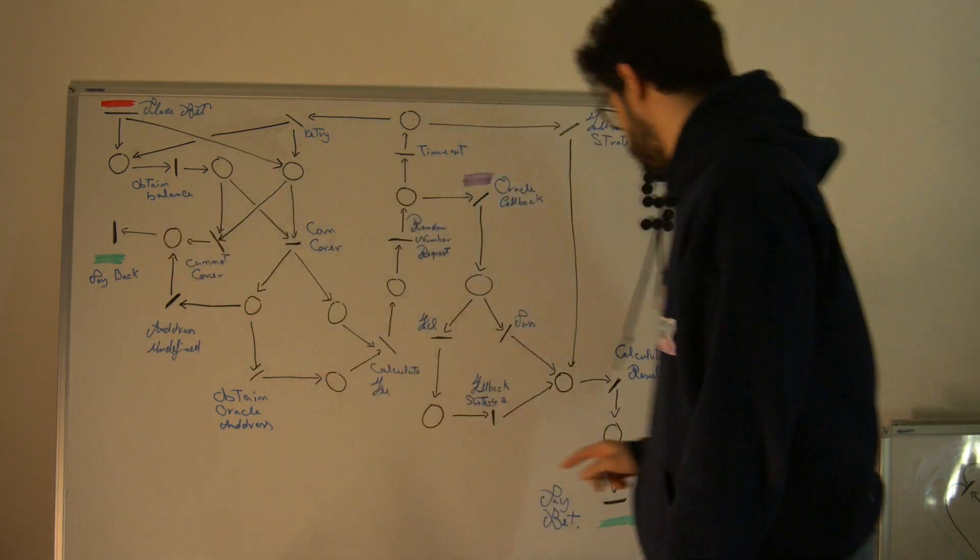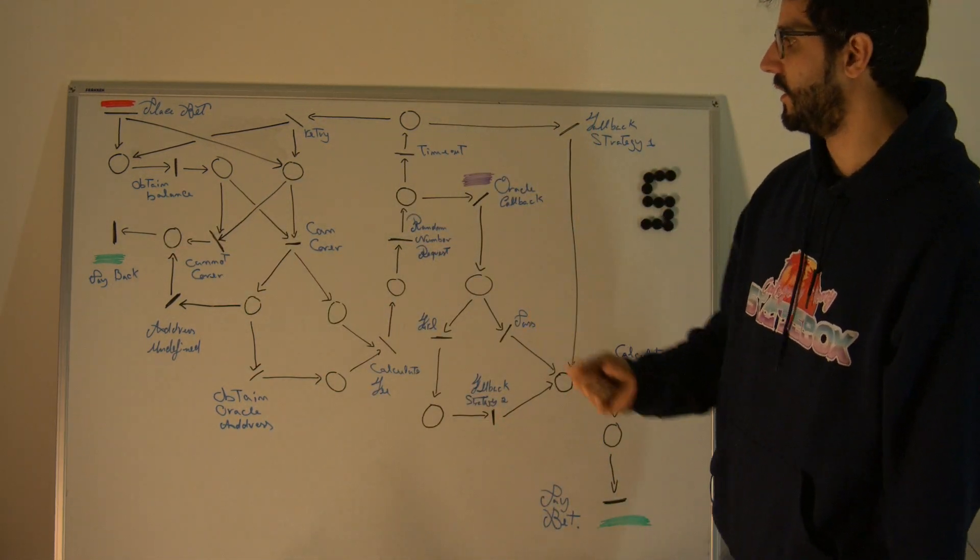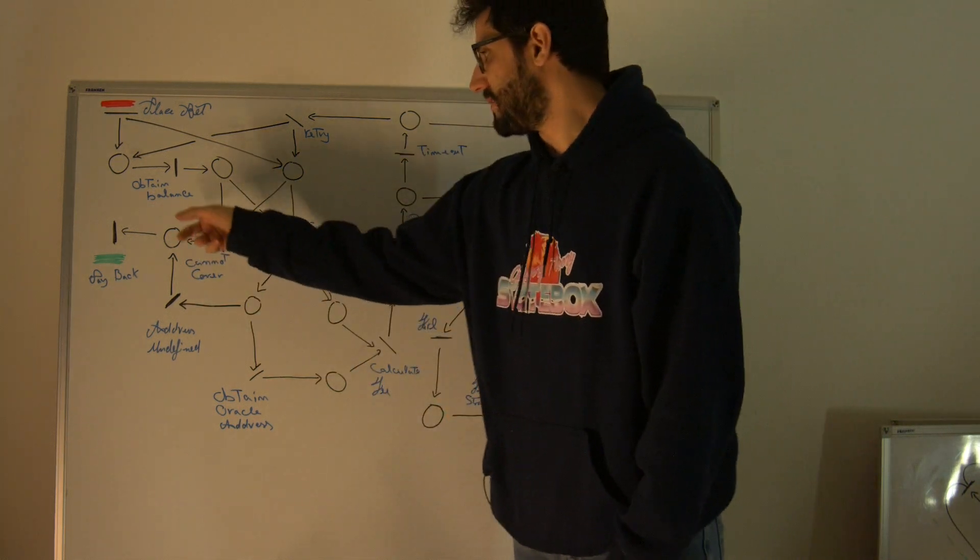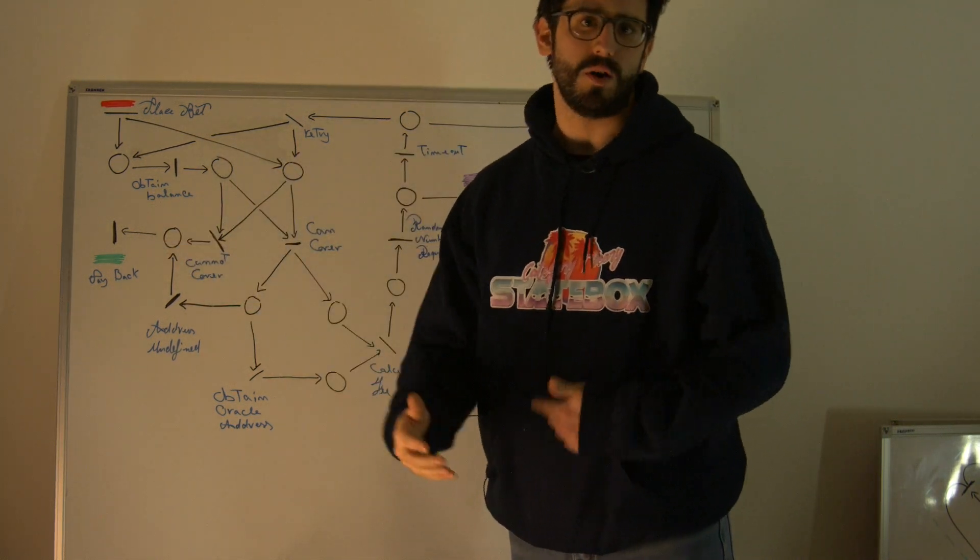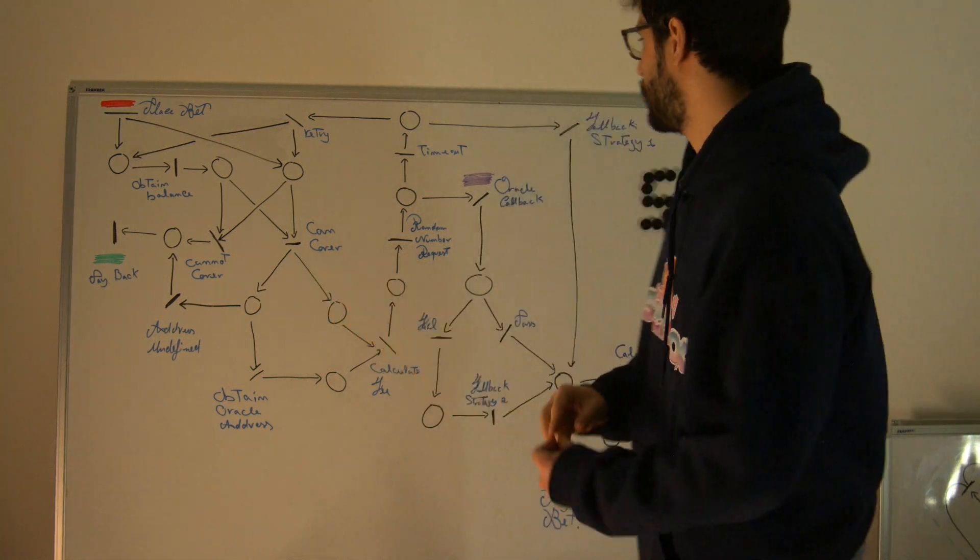And these are final transitions that burn tokens, no output places. And these are basically fired when a bet is honored or rejected, as you will see shortly.